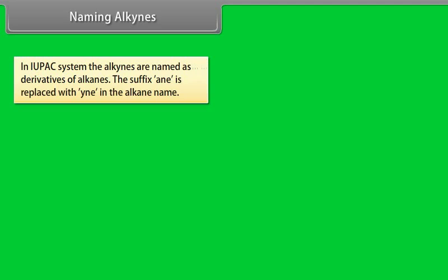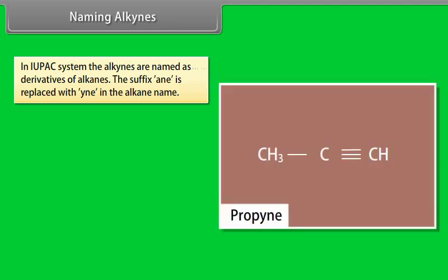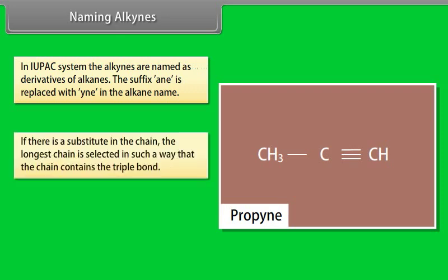Naming alkynes: in the IUPAC system, alkynes are named as derivatives of alkanes. The suffix -ane is replaced with -yne in the alkane name. For example, the given compound has 3 carbon atoms and hence the root name is propane. If the suffix -ane is replaced with -yne, we get the IUPAC name of the compound as propyne.